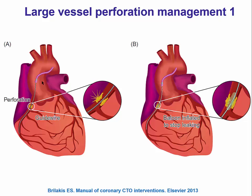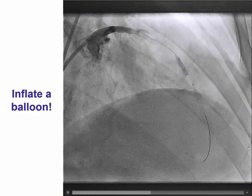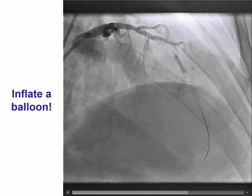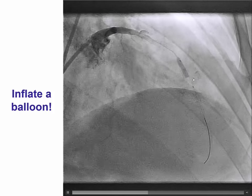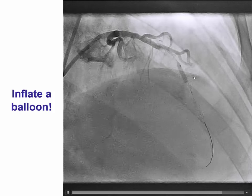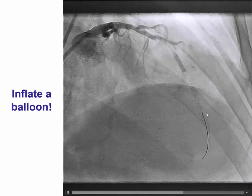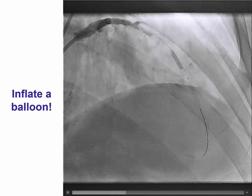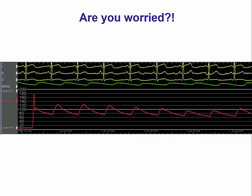Diagrammatically, the perforation is here. The very first step is to get a balloon at the site of perforation, or proximal to it, and inflate it to stop the leakage. That's exactly what we did in this case—you can now see the balloon is inflated and there is no more bleeding into the pericardium. However, the patient is going to become ischemic, which is why we want to continue with other treatment strategies.